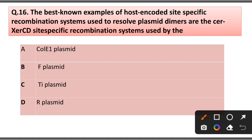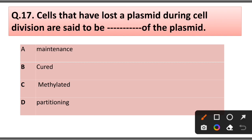Question number 16: The best-known example of a host-encoded site-specific recombination system used to resolve plasmid dimers is the Xer site-specific recombination system used by the: A) ColE1 plasmid, B) F plasmid, C) Ti plasmid, D) R plasmid. Answer is option A, ColE1 plasmid.